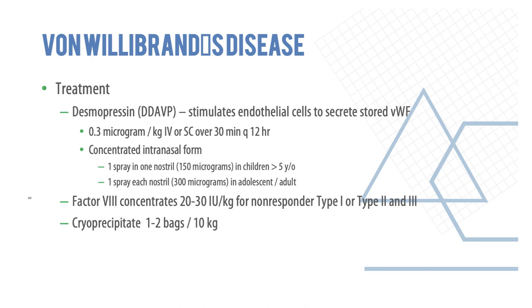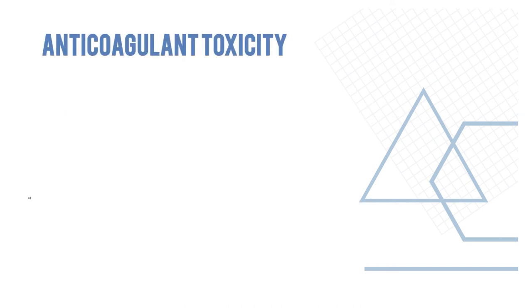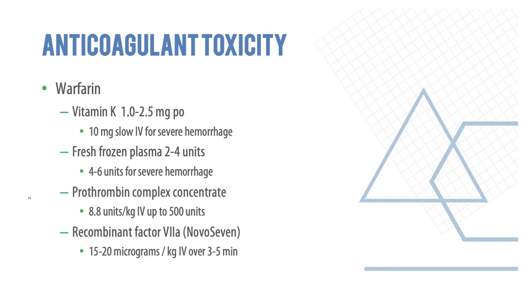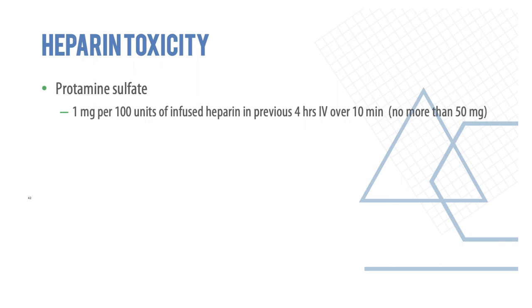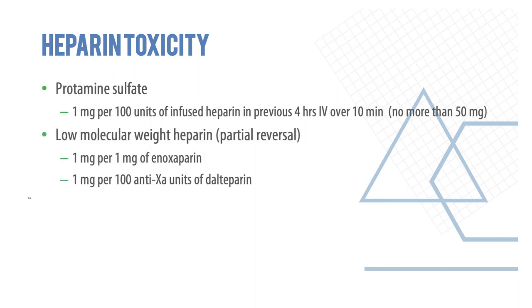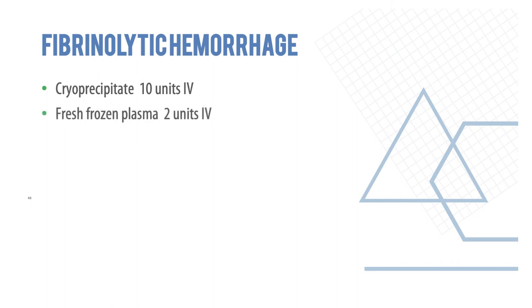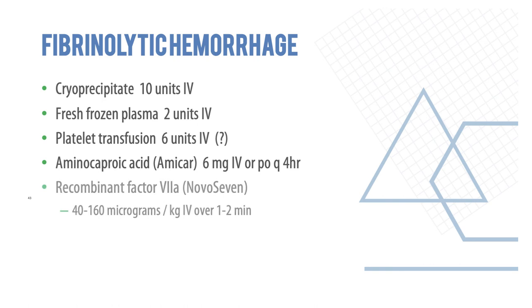Treatment of VWD: desmopressin stimulates endothelial cells to secrete stored von Willebrand's factor — 0.3 mcg/kg IV or subcutaneously over 30 minutes every 12 hours. Factor 8 concentrates may also be given for types 1, 2, and 3; cryoprecipitate also helps. Anticoagulant toxicity: warfarin is treated with vitamin K, fresh frozen plasma, prothrombin concentrates, or recombinant factor 7. Heparin toxicity is treated with protamine sulfate; low molecular weight heparin allows only partial reversal. Fibrinolytic hemorrhage is treated with cryoprecipitate, FFP, platelet transfusions, aminocaproic acid, and recombinant factor 7.